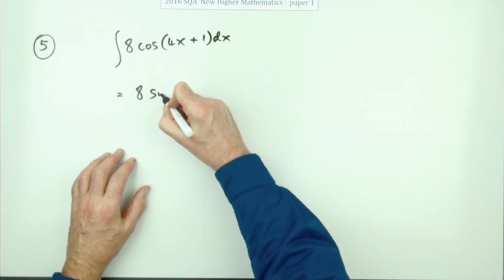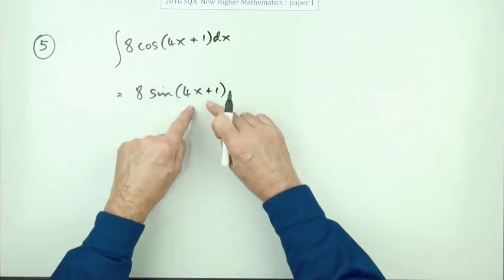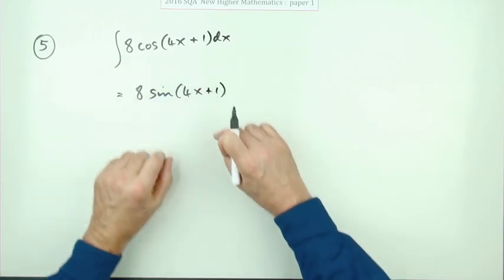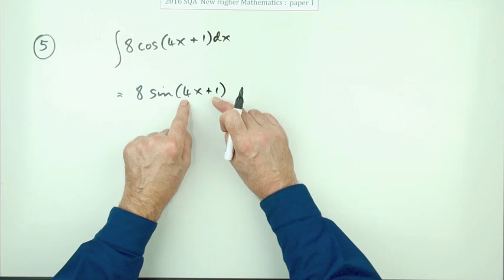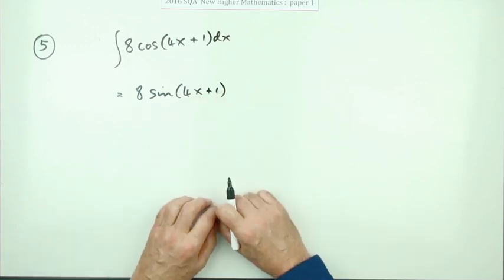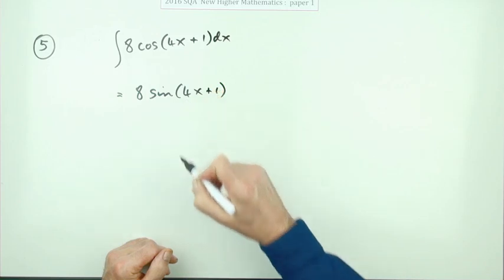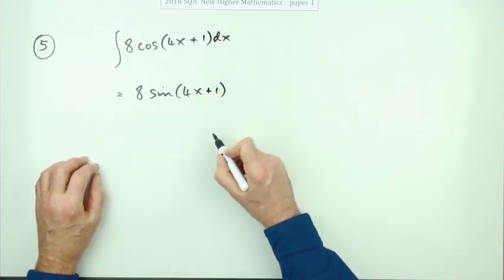That would be eight sine of four x plus one. Now if you were differentiating that expression to produce this, you'd have multiplied that by the derivative of the inside, which is a four. Which means if you're coming back to this, you need to divide by it. You're doing the opposite when you're integrating, so it'll be that divided by four. I'll just put that down like this, plus some constant.